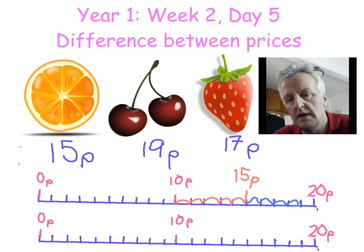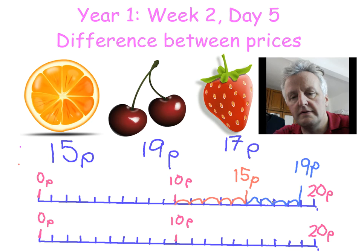So what is the difference between these two? Let's count — how many more jumps did I do? One, two, three, four. So 19 take away 15 will equal four jumps. Okay.